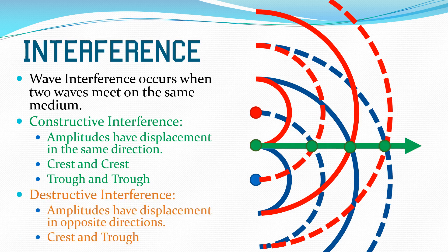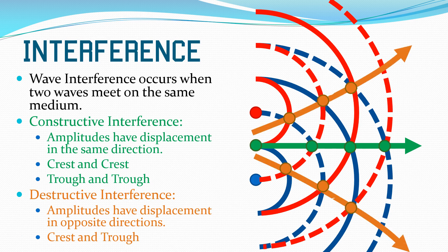Destructive interference happens when amplitudes have displacement in opposite directions. This is when a crest and a trough meet. This happens at points along this line or this line. So these are areas of destructive interference, whereas that green line is an area of constructive interference.